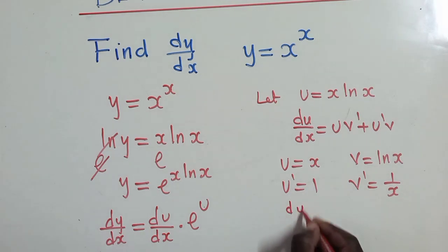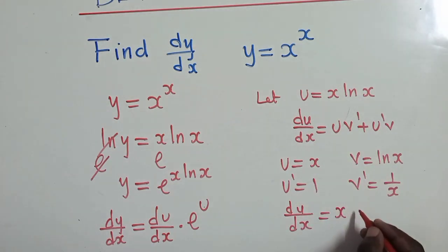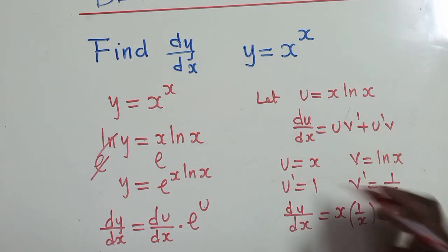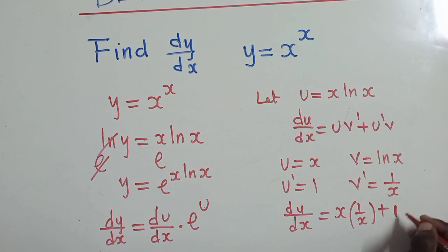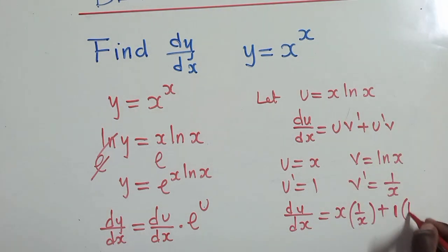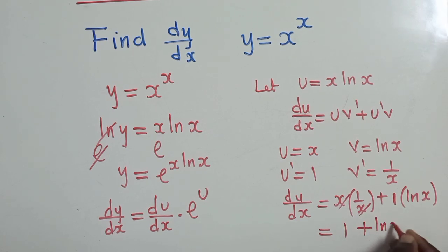So du/dx equals x times (1/x), plus 1 times ln(x). Simplifying, x times 1/x gives 1, so this becomes 1 plus ln(x).